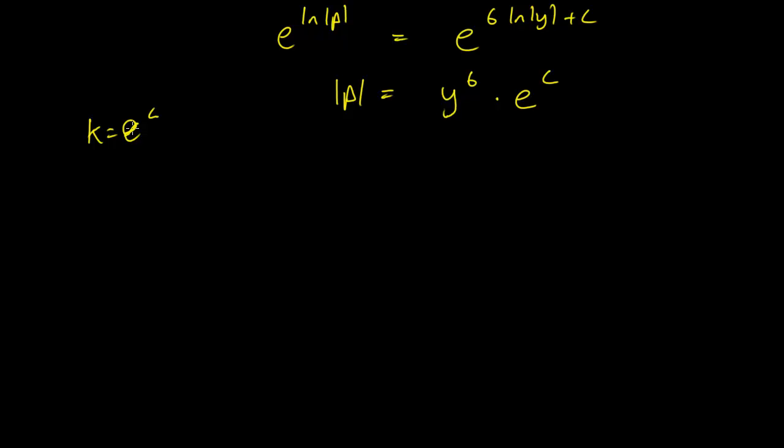There's actually something more we can do, so we can actually drop the absolute value in the p here too, because p is equal to ky^6. So the thing is, if p is negative we can simply take our k to be negative, so k is really plus or minus e to the c.